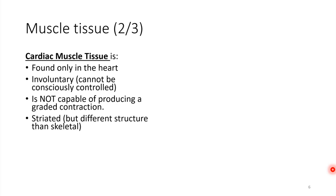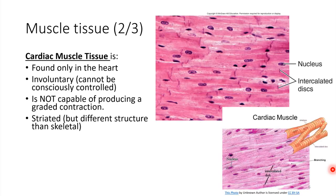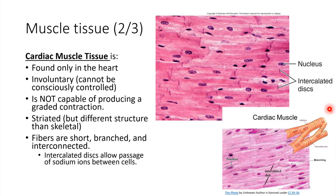Cardiac muscle is also striated, but it has a few differences compared to skeletal muscle. One difference is all of these dark bands called intercalated discs — these are separations between adjacent cardiac muscle cells. What they do is help allow ion flow from one cell to the next. Intercalated discs are something special that cardiac muscle has; skeletal muscle does not.